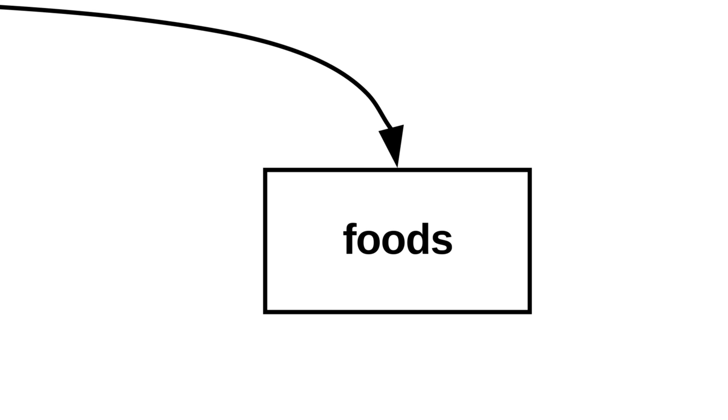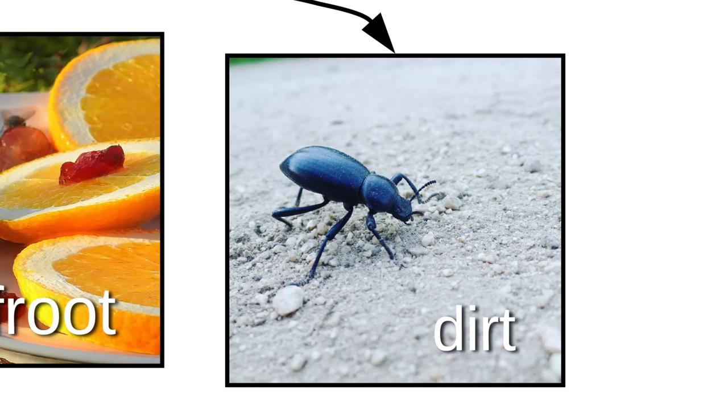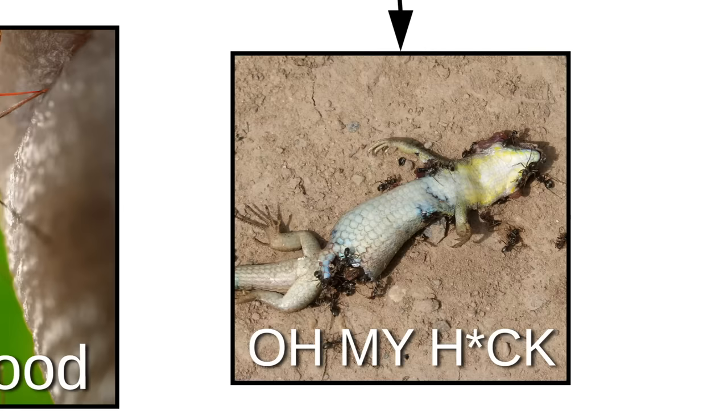Bugs eat many foods, like nectar, fruit, dirt, blood, and oh my heck! Well, they didn't choose the bug life. The bug life chose them.